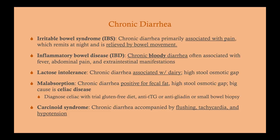Malabsorption presents as chronic diarrhea with positive fecal fat — they're not absorbing things in the small bowel, and fat and other substances pass into the large bowel where they cannot be absorbed, drawing water in and preventing reabsorption. This produces a high stool osmotic gap, but the difference from lactose intolerance is the positive fecal fat. The most common cause is celiac disease. Because of malabsorption, patients also have issues absorbing vitamins. Another feature is weight loss — fat is nine calories per gram, so they're missing out on a lot of nutrients. Patients with cystic fibrosis also commonly present this way.